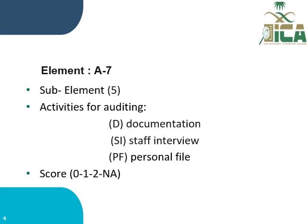Element A7 has five sub-elements, and the activities for auditing those elements are document review, staff interview, or personal file. The score for each sub-element is 0, 1, 2, or not applicable.